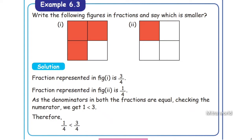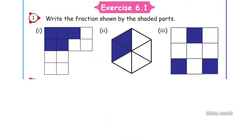Now we are going to see exercise 6.1. Question 1: write the fraction shown by the shaded parts. These are very simple questions. The first one: the answer is 5 by 12.